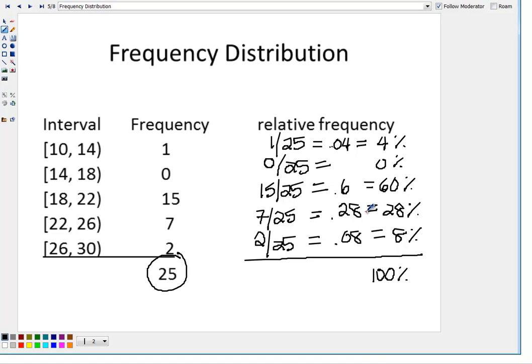But if you round numbers, you might have rounding error, which means you might not get 100%. You might get 101% or you might get 99%, but it should be close to 100%. So this is how you calculate relative frequency.